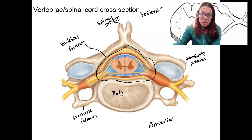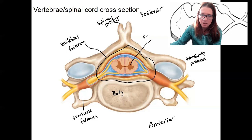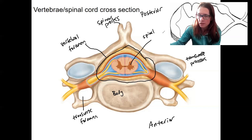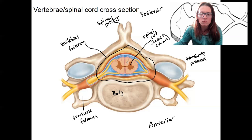Then we've got our spinal cord. The spinal cord is made up of horns and white matter — horns and columns. You can see those horns, right? And the columns are the white matter. We'll go into more detail on that.